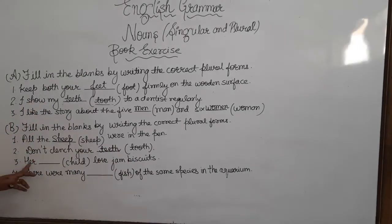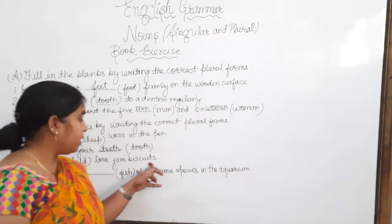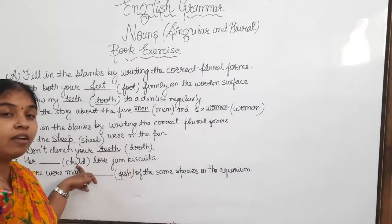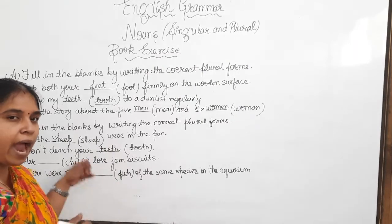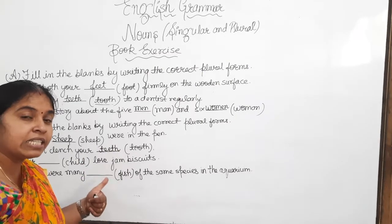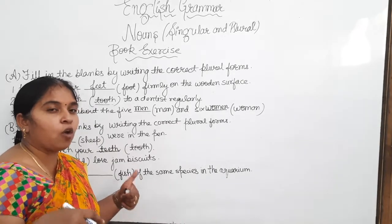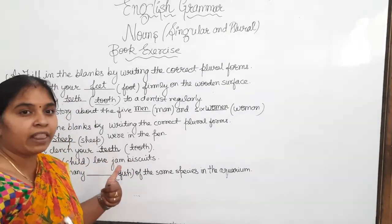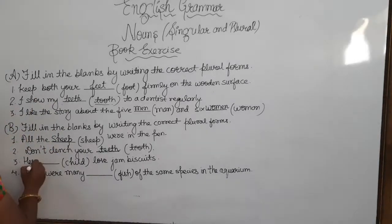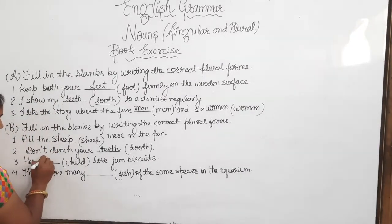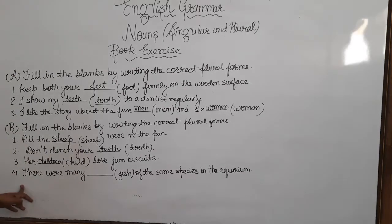Next: 'Her dash love jam biscuits.' In the bracket the word is 'child.' Child is a singular noun, and the plural of child is 'children.' We add R-E-N to the singular noun child and we get the plural noun 'children.' So here in the blank you will write 'children' — C-H-I-L-D-R-E-N.